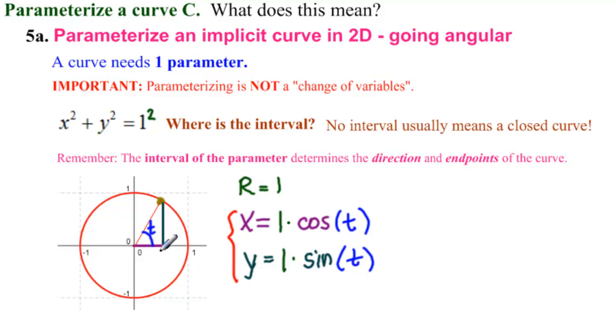And we can see from our picture that t starts at 0. And in order to get all the way around the circle exactly once, starting at this point, we need t to be from 0 to 2 pi.